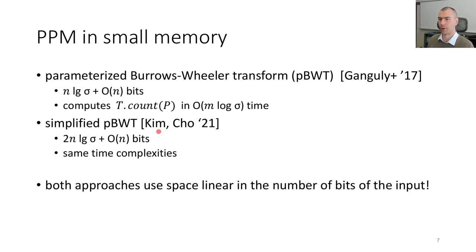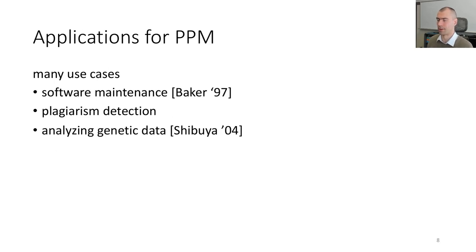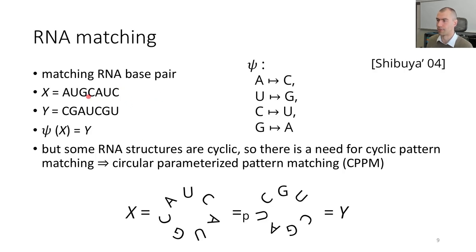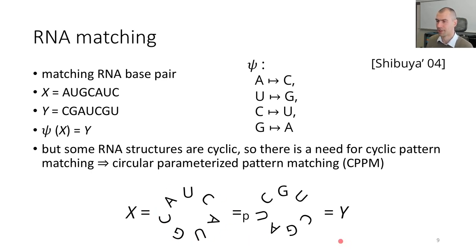The question now is: what are the applications for PPM, and why do we want to extend? The first application was given by Baker for software maintenance, where you have blocks of the same code but different variables, so you can use PPM to find these kinds of blocks. This can also be adapted for plagiarism detection and for analyzing genetic data, where for instance you have RNA base pairs and you want to check whether sequences match using the psi function to map x to y.